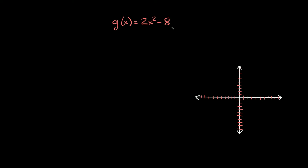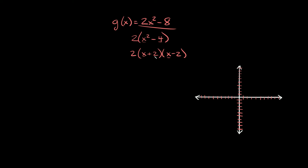Here's the next function: g of x equals 2x squared minus 8. This is not in intercept form, so we need to convert it by factoring. We can pull out a positive 2, leaving x squared minus 4 inside. Now x squared minus 4 factors as x plus 2 times x minus 2, because this is a difference of squares — x squared minus a perfect square. You split the x's and take the square root of 4, which is 2, putting one positive and one negative.